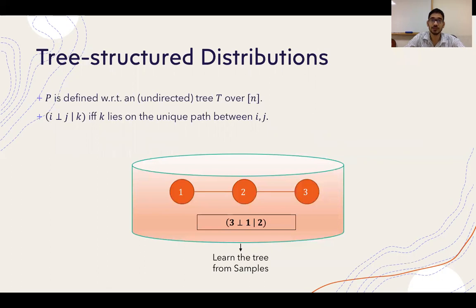Our focus for this talk will be a special case of these two networks which is called tree-structured distributions. Such a distribution p is defined with respect to an undirected tree over the n nodes 1 up to n. I have shown here such a tree-structured distribution defined on a tree which is a path on three nodes.